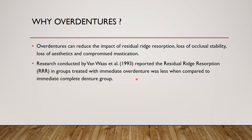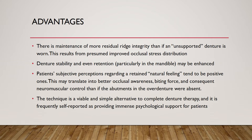Why do we make overdentures? Overdentures can reduce the impact of RRR — residual ridge resorption — loss of occlusal stability, loss of aesthetics, and compromised mastication. Van Was et al. in 1993 reported that RRR in groups treated with immediate overdenture was less compared to patients treated with immediate complete denture. Many studies prove that overdentures preserve the ridge.